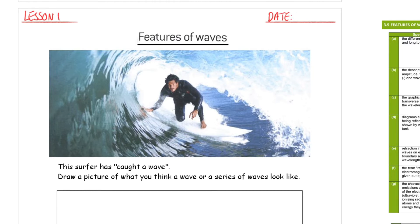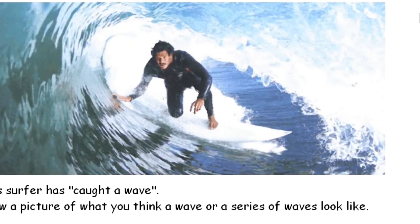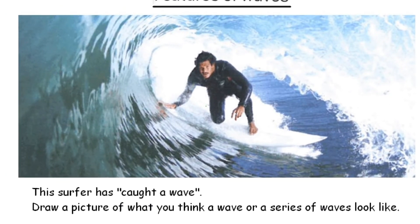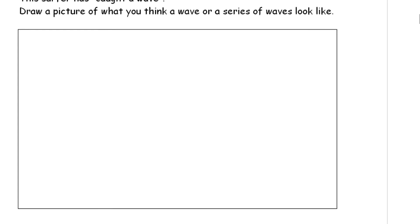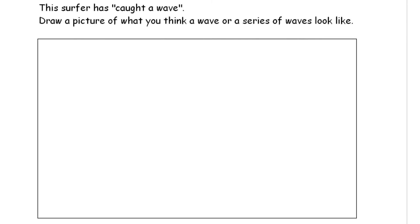So if you could please, at the top of page 3, write down lesson 1 and the date. The title is already underlined for you — features of waves — and waves is really what we're going to be learning about. You can see there, look, on this photo, a surfer in the middle of a wave. I think the surfers call them tubes. So it says underneath: this surfer has caught a wave. Draw a picture of what you think a wave or series of waves looks like.